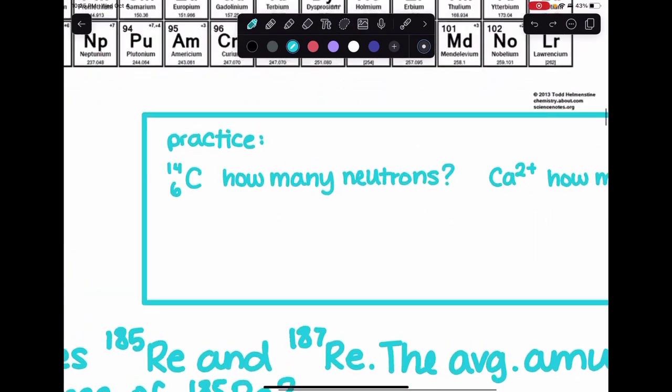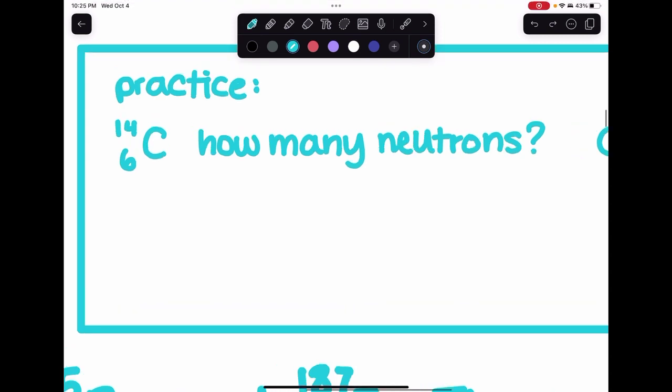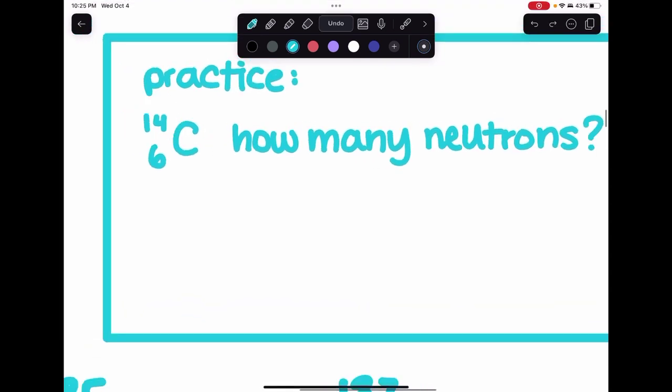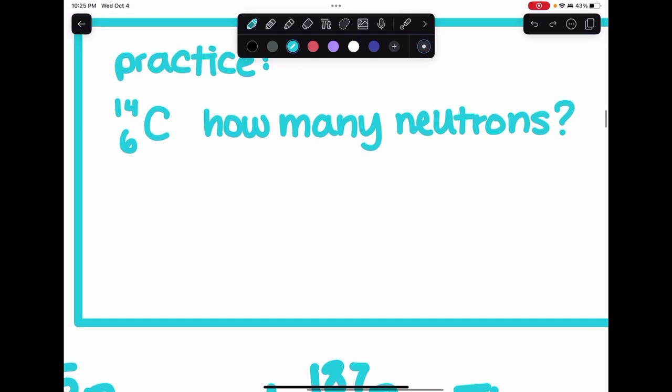Let's try to do some practice problems. We have carbon-14 here. We just have to worry about how many neutrons there are. This is the mass number and this is the atomic number. So this is protons plus neutrons and that's just protons, so to get the number of neutrons you just have to subtract, that would be eight.